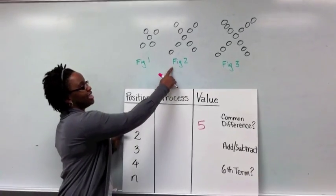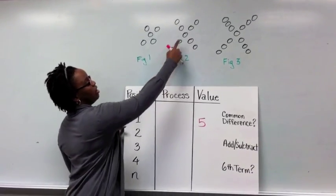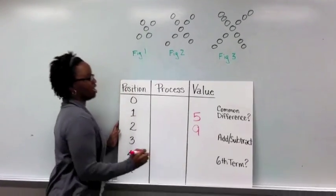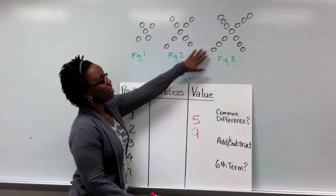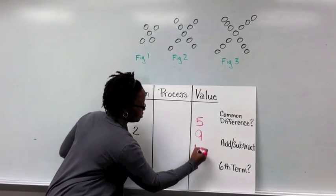The second x, the one in position 2, has a value of the number of pebbles that it takes, which is 9 if you count them up. And if we look at figure 3, we've got a total of 13 pebbles.